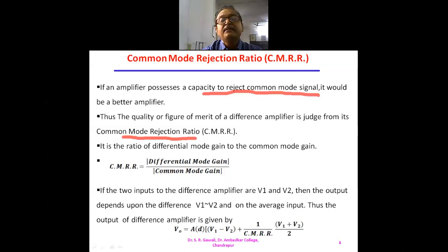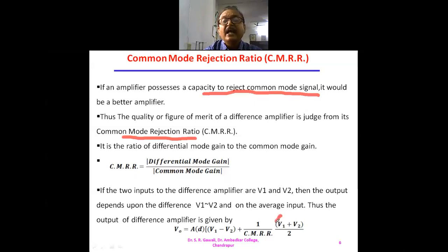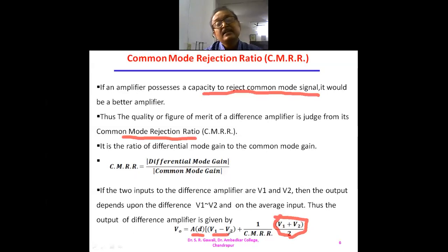If the two inputs of the difference amplifier are V1 and V2, then the output involves both the difference and average of the inputs. The output of the difference amplifier is given by V0 = A_D × [(V1 − V2) + (1/CMRR) × (V1 + V2)/2]. Here, (V1 + V2)/2 is the average of the inputs, and (V1 − V2) is the differential input for the double-ended case.